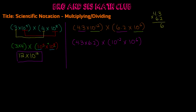First we're going to multiply 4.3 times 6.2. So: 3 times 2 is 6, 4 times 2 is 8. Add a 0 and move on to the tens place. 3 times 6 is 18, carry the 1. 6 times 4 is 24, plus 1 is 25. Add them together and you get 2,666. But don't forget the decimal points — we have 1 and 2 decimal places, so we move it two places and get 26.66.